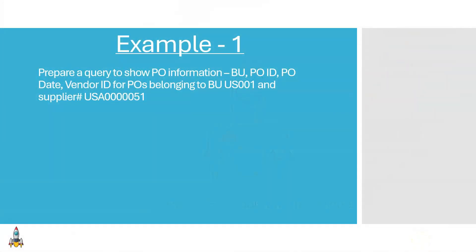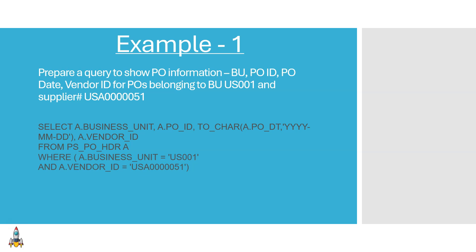To understand subquery, let's consider this example. We have a report request to display the business unit, PO ID, PO date, and the vendor ID for all POs belonging to business unit US001 and supplier USA51. The SQL selects the required fields from the PO header table where business unit equals US001 and vendor ID equals USA51. This is a straightforward SQL where the WHERE criteria is fixed — no matter when you run the query, it will always give you the correct result.